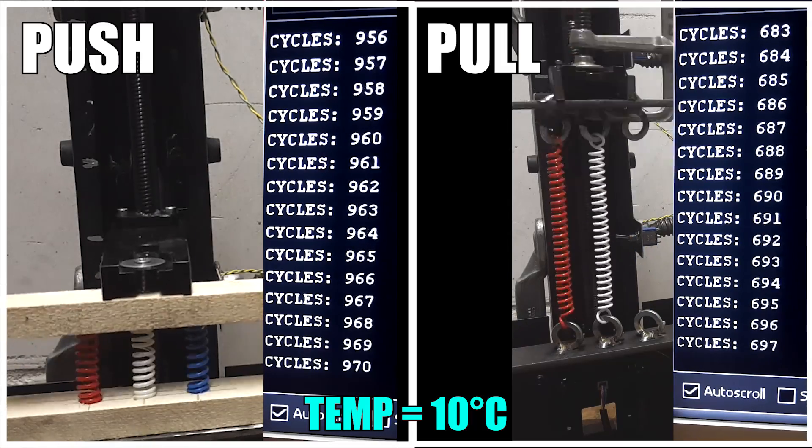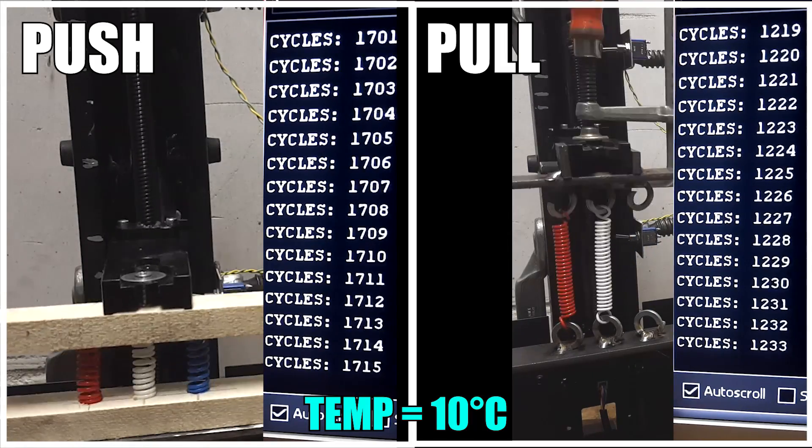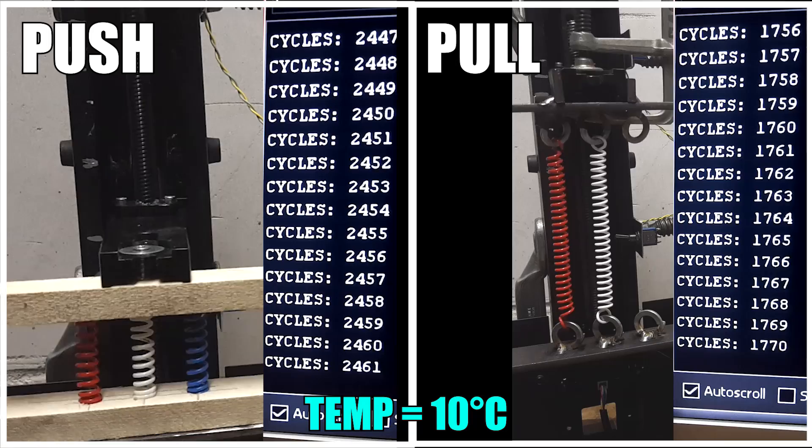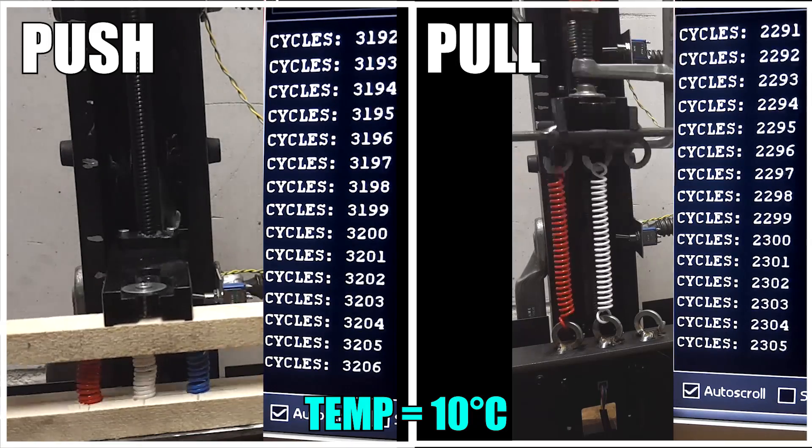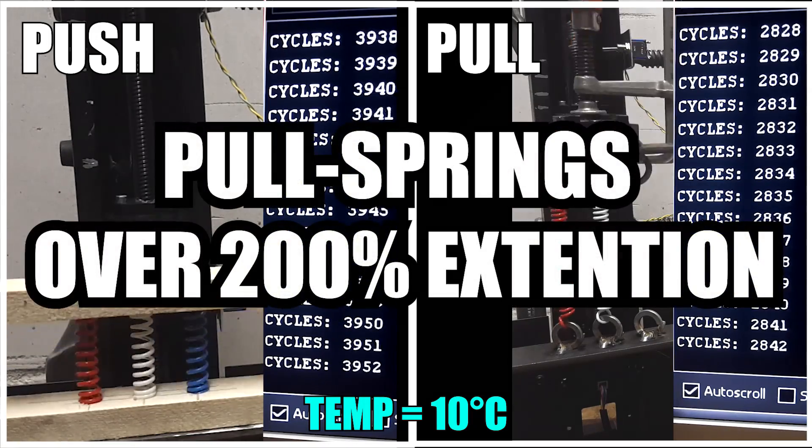So at around 500 cycles the PLA pull spring broke, but I have to admit it was 10 degrees Celsius in there and also the springs were extended over 200% their original length.